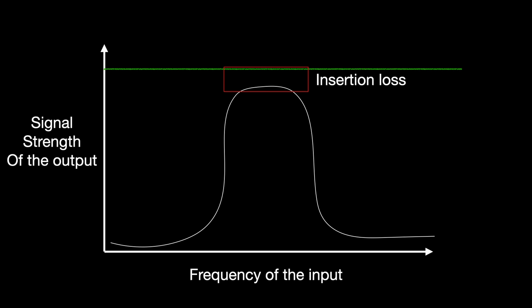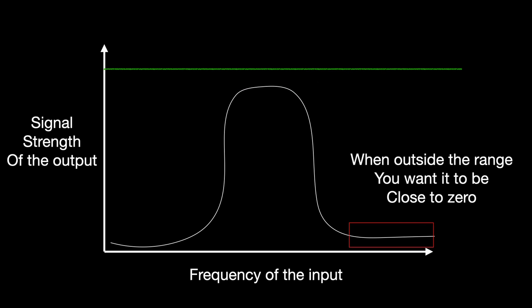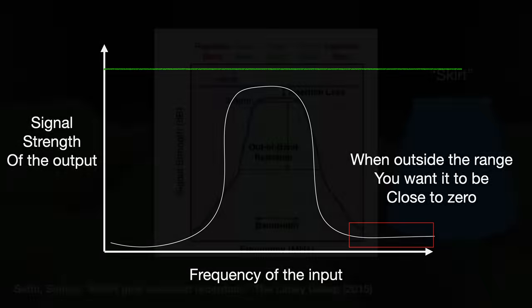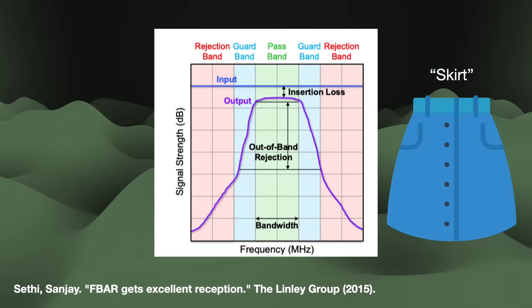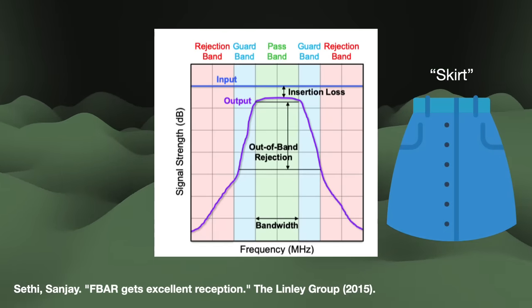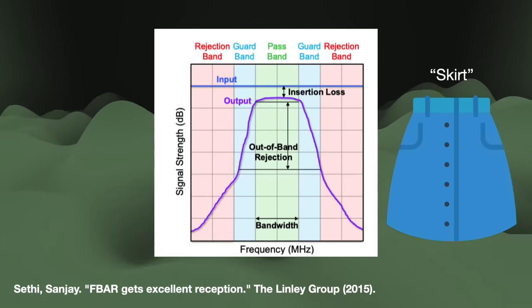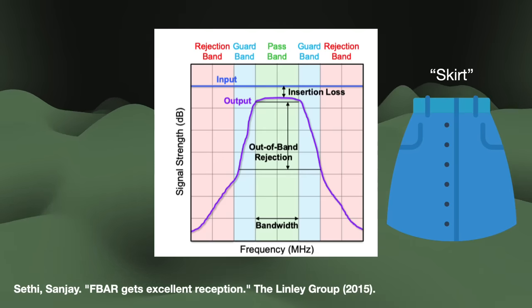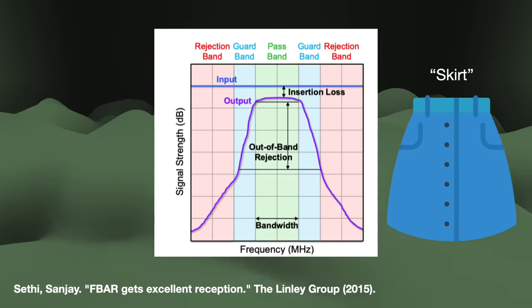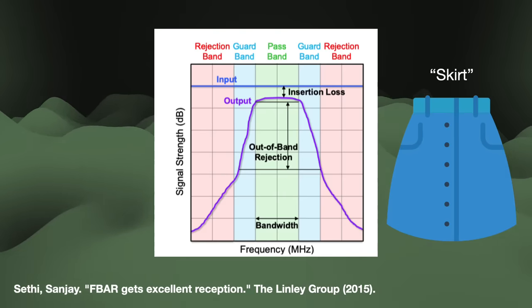If the output is outside the desired range, then the output is zero — practically it can't be zero, but we want it to get as low as possible. Chart this whole thing out and you get something that kind of looks like a woman's skirt or a mesa. So in the industry, what they call a steep "filter skirt" means that the filter lets through a lot of the right bands and rejects the unwanted ones.